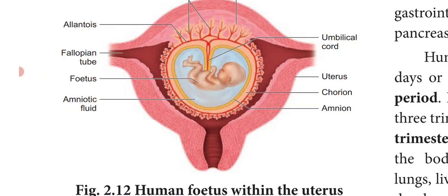We have also seen about the placenta and its function. The placenta does the nutritive, respiratory and excretory functions. The human pregnancy lasts for about 280 days or 40 weeks, and this is called the gestation period.